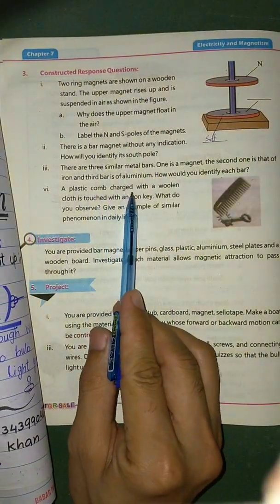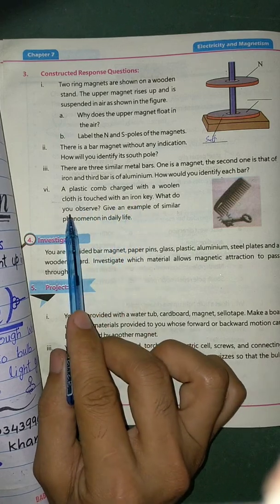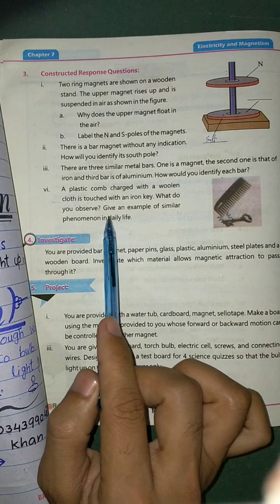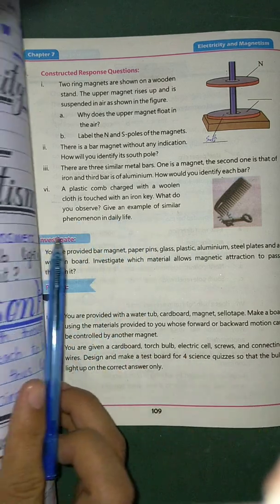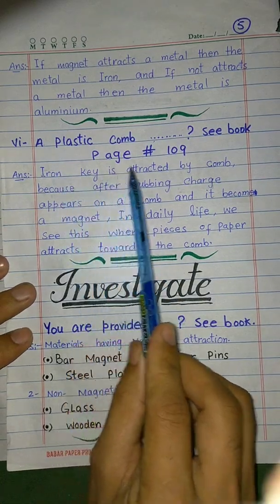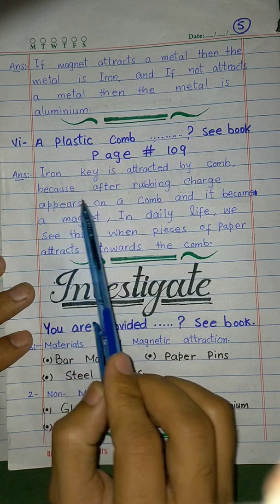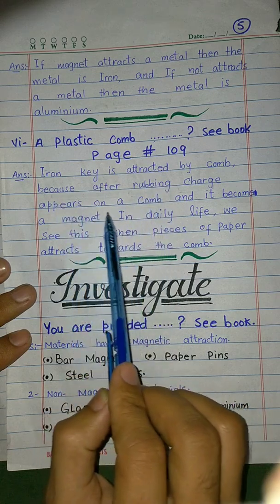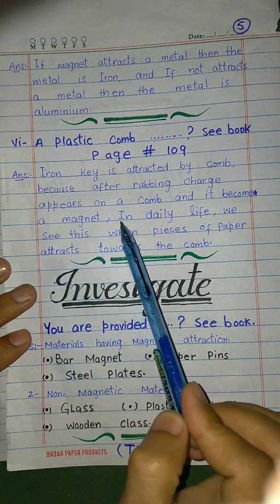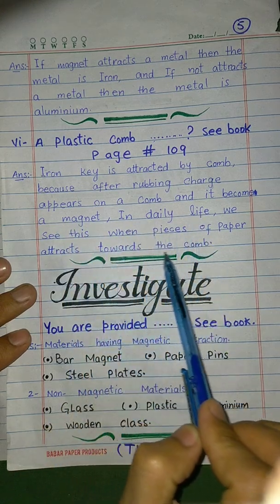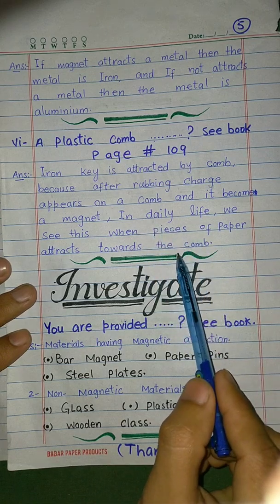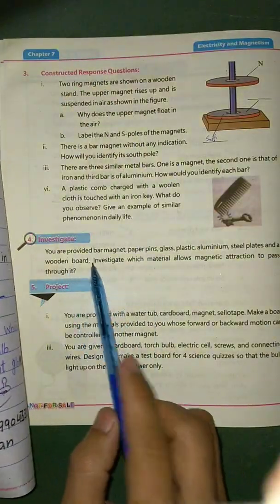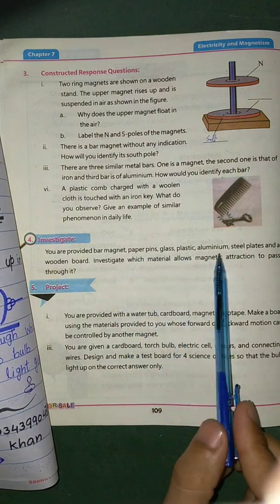A plastic comb charged with a woolen cloth is brought near an iron key — what do you observe? After rubbing, a charge appears on the comb. The iron key is attracted by the comb. In daily life we also see pieces of paper being attracted toward a charged comb due to static electricity.